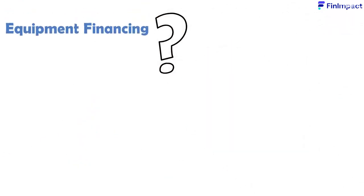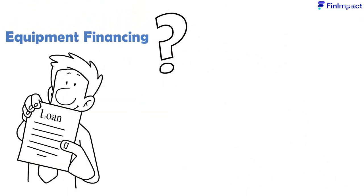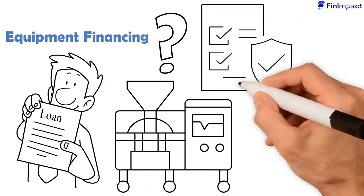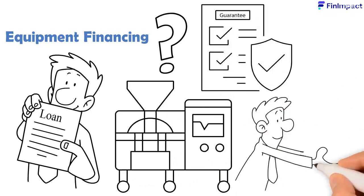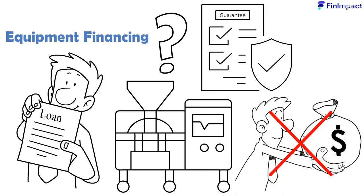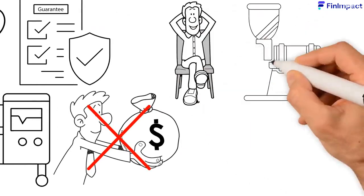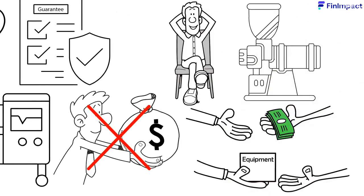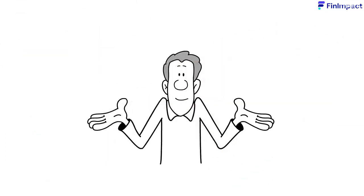So what exactly is equipment financing? It's a loan where the equipment you wish to purchase becomes the guarantee or collateral for the loan. This means that if you can't repay the loan for whatever reason, the lender will use the equipment you purchased to retrieve the money that was lent by selling the equipment that was bought.